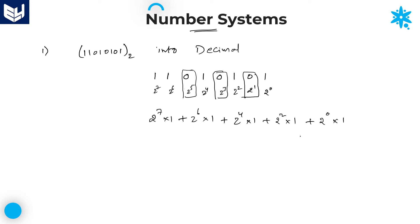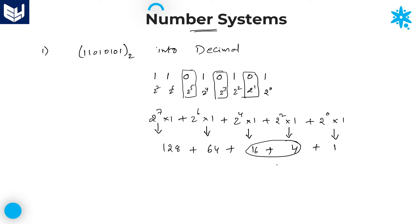Now let me calculate each value. 2 power 0 into 1 is 1. 2 squared is 4, so 4 into 1 is 4. 2 power 4 is 16. 2 power 6 is 64. And 2 power 7 is 128. Now add all the values: 1 plus 4 is 5, plus 16 is 21, plus 64 is 85, plus 128 gives a total of 213.